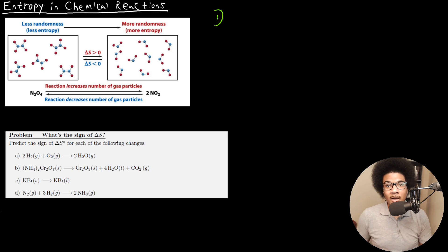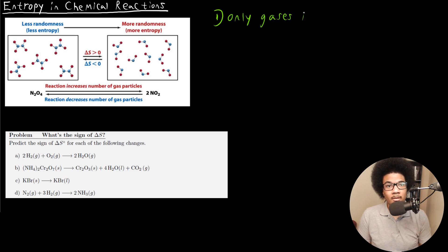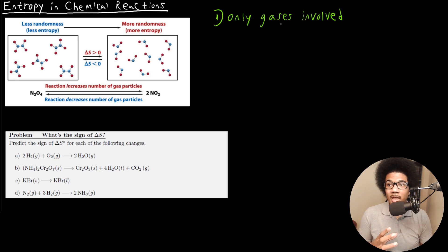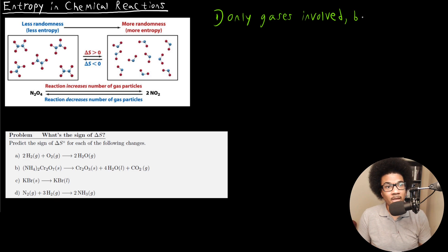The first is: are there only gases involved in this process? If you have a reaction where two gases react to form another gas, then basically the entropy is going to depend on the number of moles of gas that is produced. So it's going to be based on the number of moles of gas produced.